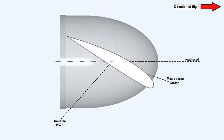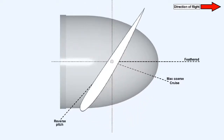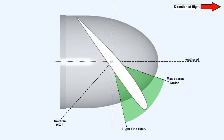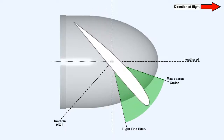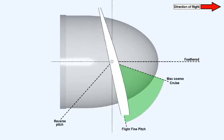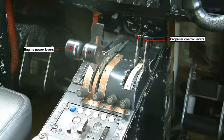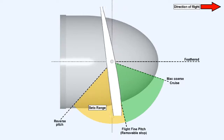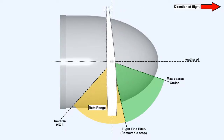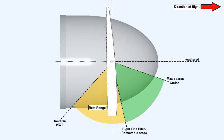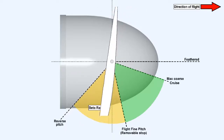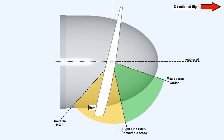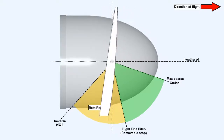Most turboprop engines are provided with a system of propeller control defined by alpha and beta ranges. The alpha range is used at high speed during the takeoff run, in flight, and during the initial high speed part of the landing rollout. It is selected by moving the engine power lever to a position at or above flight idle. The beta range is used on the ground only. It is selected during the landing roll by first removing the flight fine pitch stop (FFPS), which was previously engaged to prevent the blades moving to ground fine pitch in flight, and then moving the engine power lever to a position below the flight idle position. On systems not equipped with a hydraulic flight fine pitch stop, the power lever is moved through a flight idle detent or gate.